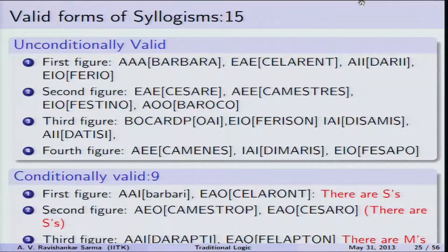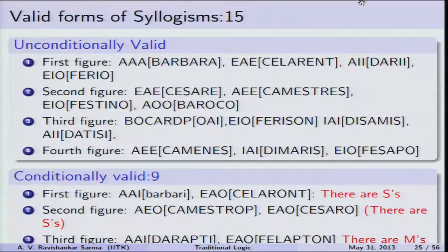In figure 3, valid moods include OAI, EIO, IAI, and AII. In figure 4, valid moods are EEI, AII, and EIO. The conditionally valid syllogisms in figure 1 include AAI and AEO, and in figure 2 include AEO and EAO, depending on whether the subject term is non-empty.